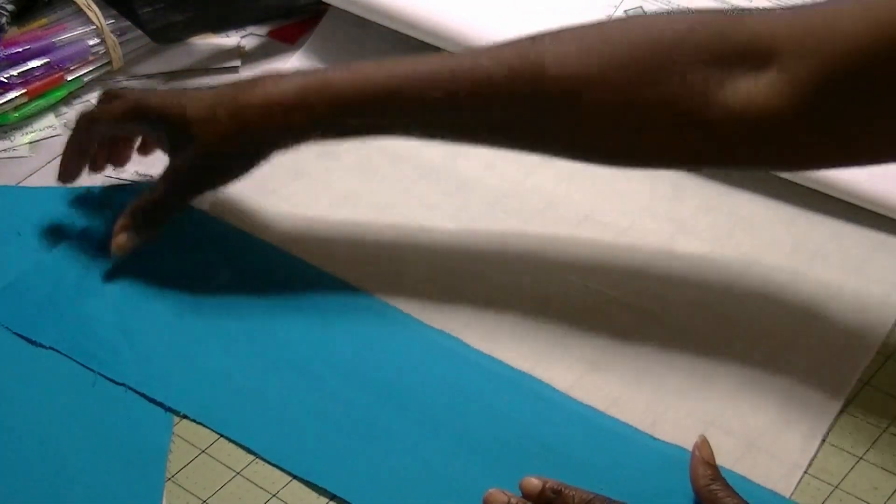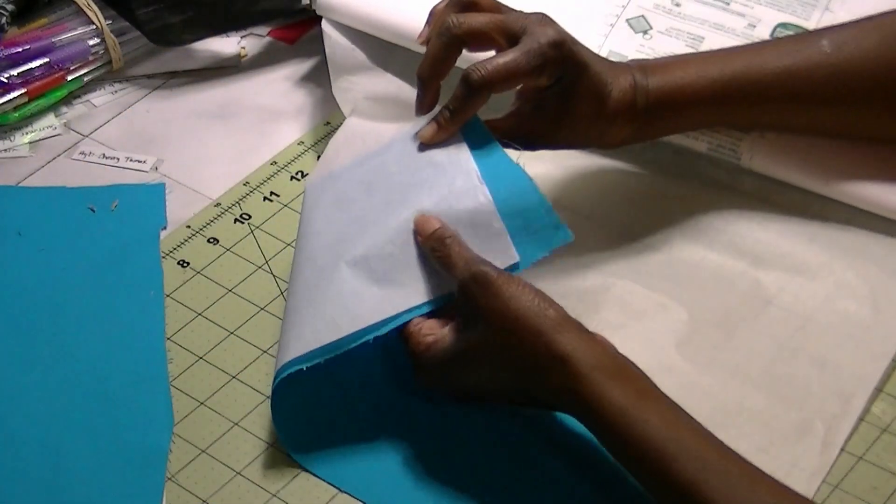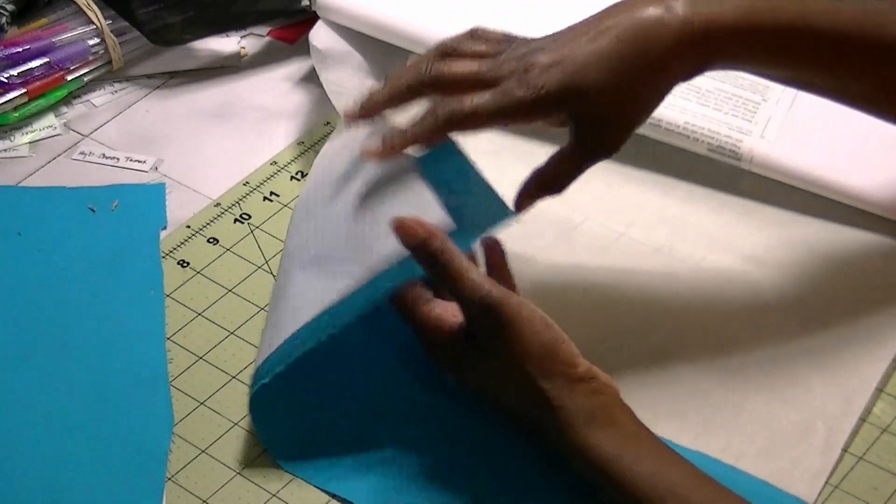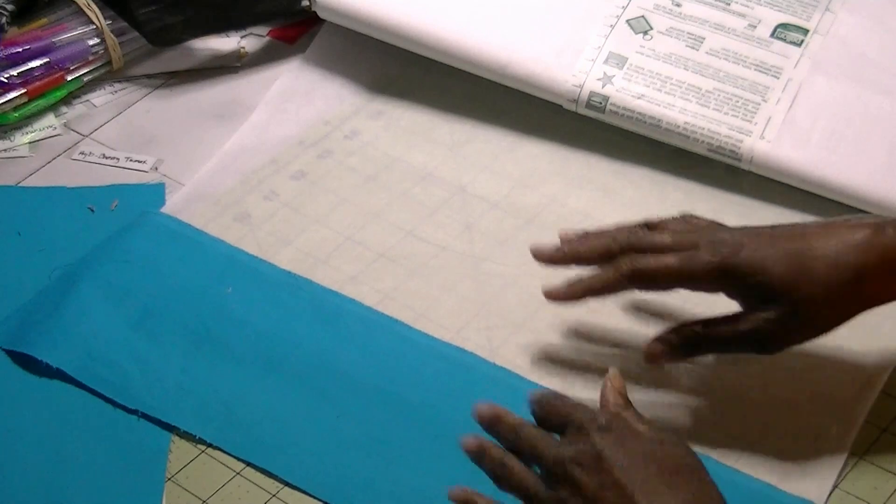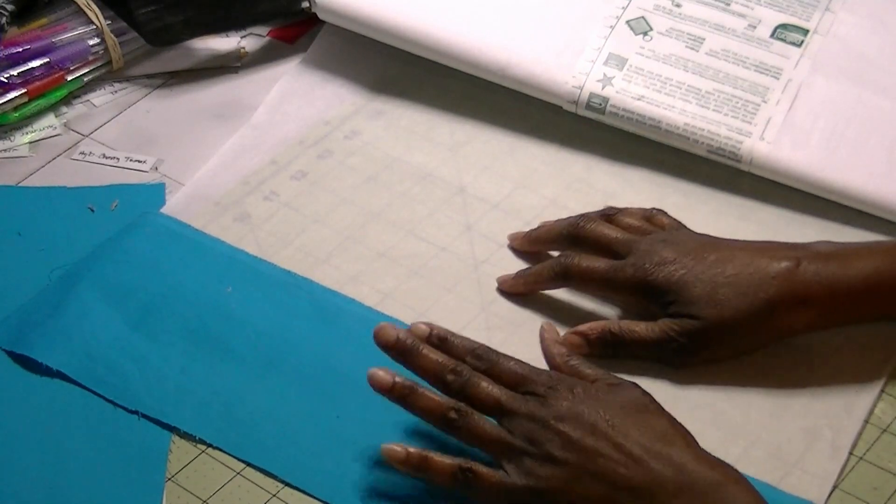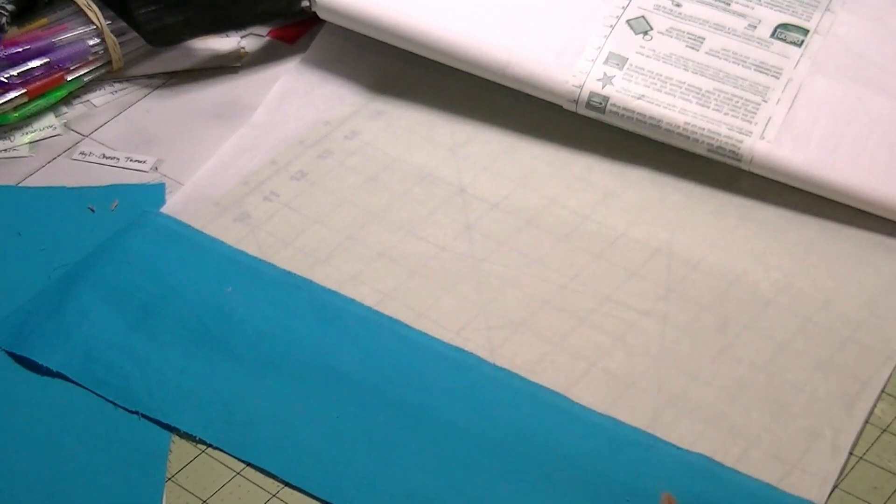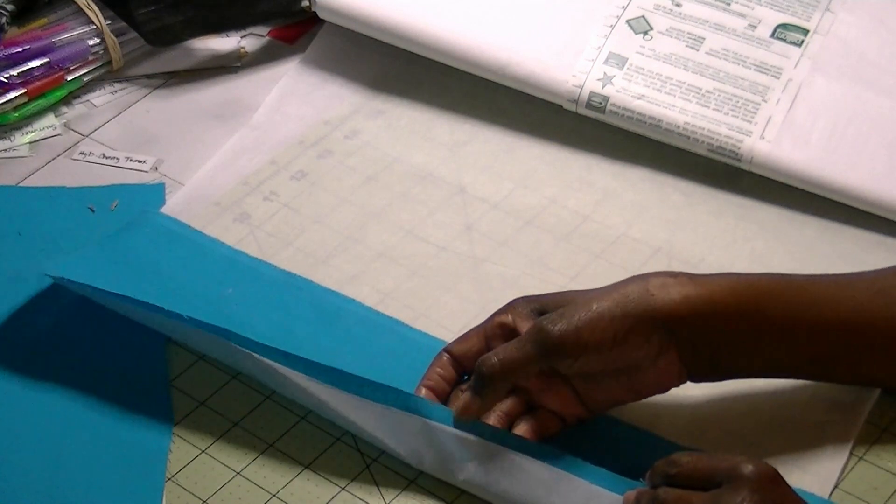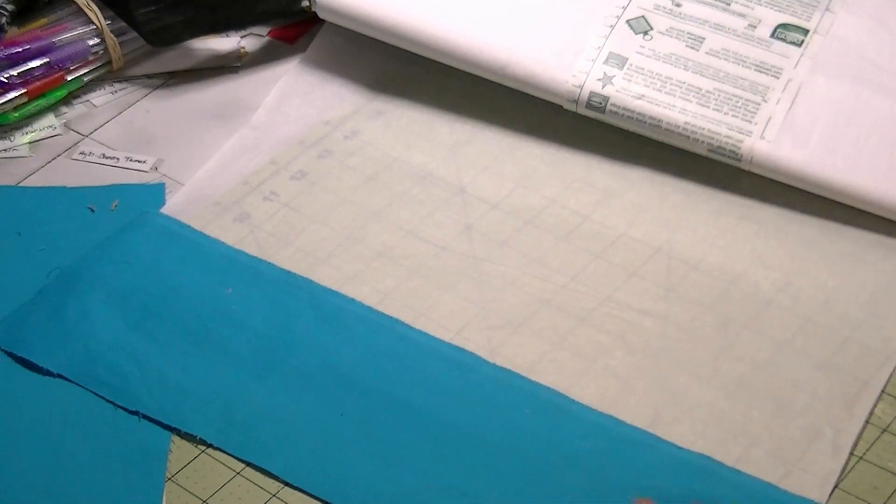And you may notice that I'm leaving a little edge on each side because this stuff is terrible if it gets on your iron or your ironing board. So you don't want it on there.